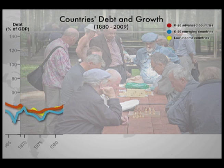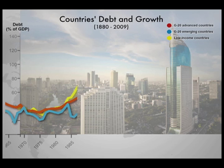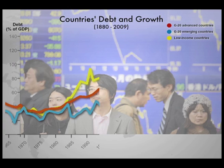In the past 40 years, public debt ratios in emerging markets, pictured here in blue, have remained below 50% of GDP, but have shown considerable volatility at times, such as the Latin American debt crises of the early 1980s and the Asian financial crisis in the late 1990s.